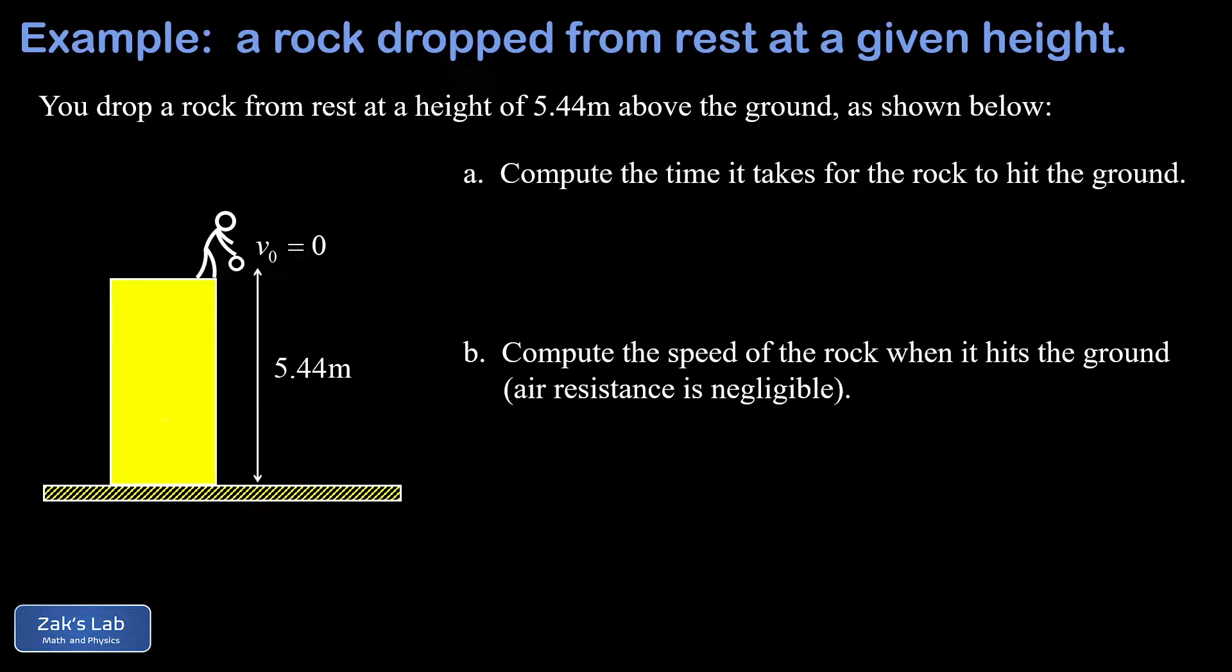So before we start, I want to make it clear that we're going to use the approximation of g as 9.8 meters per second squared. In other words, the rock is going to accelerate downward at 9.8 meters per second squared.